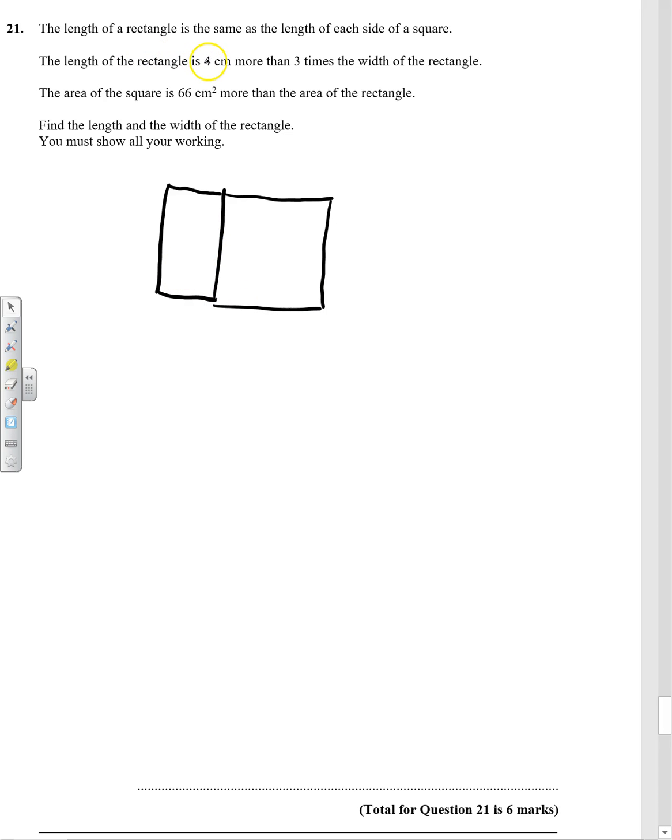Now, the length of the rectangle is 4 centimeters more than 3 times the width. So if we make the width x, this side here is going to be 3x plus 4. So now we've got the dimensions of the square as well. That would be useful.